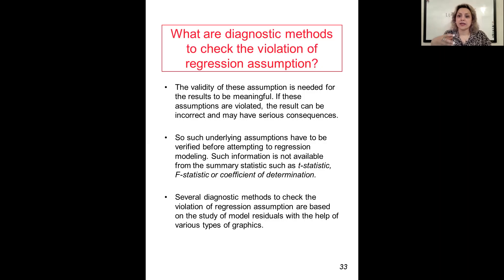We want to use different test statistics, but at the same time, you need to have your ANOVA table to compare the observed F with the F from the table. We need something before going to those steps, and there are several diagnostic methods to check the violation of regression assumptions.